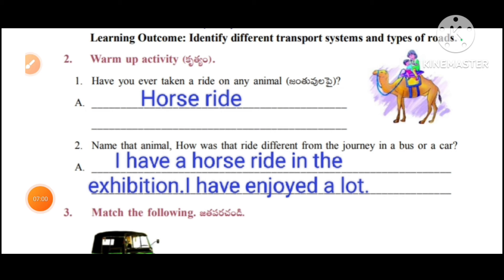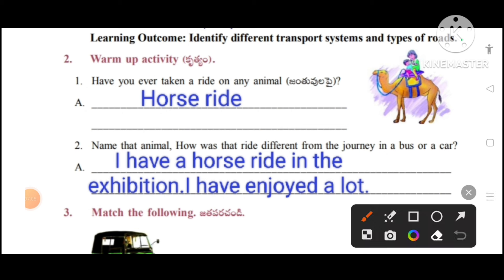Learning outcome: identify different transport systems and types of roads. Warm up activity — first one: have you ever taken a ride on any animal? Yes, I have taken a ride on a horse. Name that animal — horse. How was that ride different from the journey in a bus or a car? I had a horse ride at the exhibition and I enjoyed it a lot.